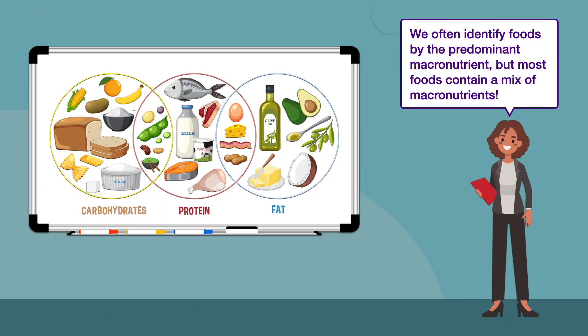A diagram like this isn't perfect, yet it serves as an excellent introduction to the macronutrient composition of different foods. We often identify foods by the predominant macronutrient, but most foods contain a mix of macronutrients. Thus, we usually call foods like bread, rice, and pasta carbohydrates even though they contain small amounts of protein and fat. We also call foods like fish and chicken protein even though they contain varying levels of fat, and we call foods like avocado fat even though they contain small amounts of protein and carbohydrates. Some foods, like beans, lentils, nuts, and cheese, have a close enough blend that they get thrown between two macronutrients.